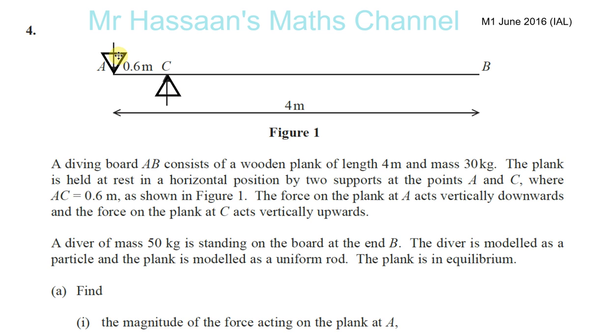So therefore, there's going to be a force acting down from here due to that support. Reaction at A and reaction at C. So you've got RA and RC. We don't know about the central mass yet. So AC is 0.6 meters. As shown, the force on the plank at A acts vertically downwards and the force on the plank at C acts upwards. A diver of mass 50 kilograms is standing on the board at the end B. So if he's standing at the end B, then his weight's going to be acting down. His mass is 50 kilograms, so that's going to be 50G Newtons.